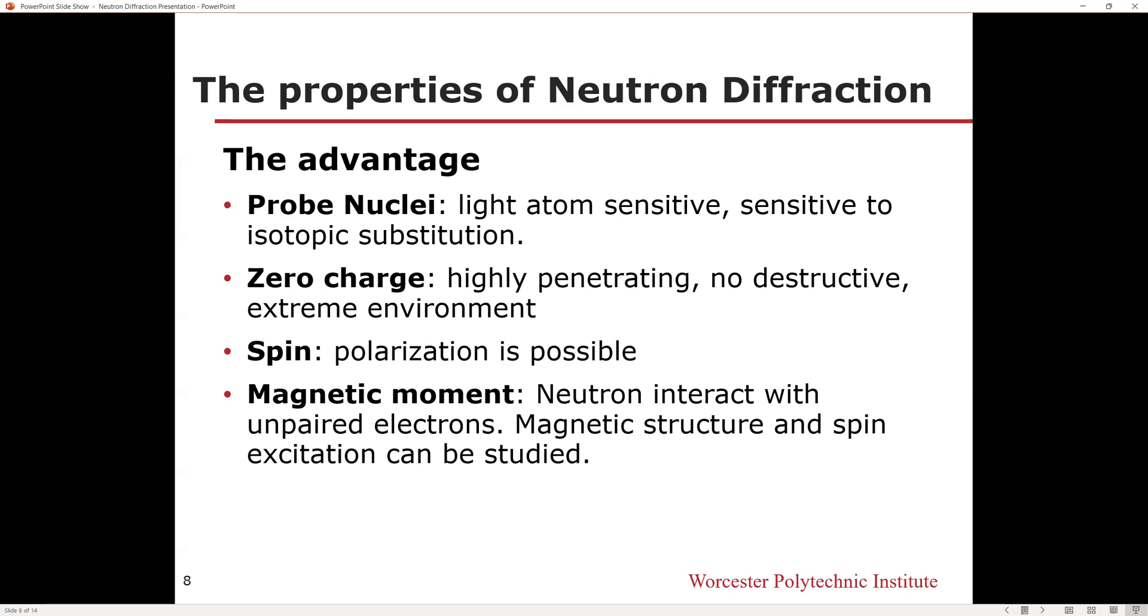Neutrons also have spin, which makes polarization available. The last advantage is that it has magnetic momentum, which can be used to study the magnetic structure and spin excitation of materials. The neutron diffraction spectrum contains magnetic ions and magnetic structure information. The specific magnetic periodic structure can be obtained by fitting a central mode to a specific peak position of neutron diffraction.